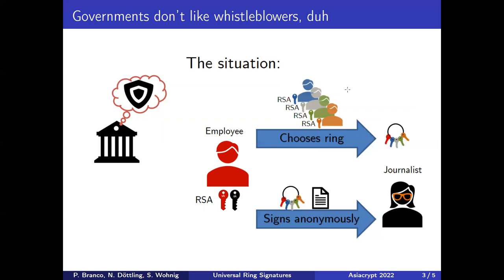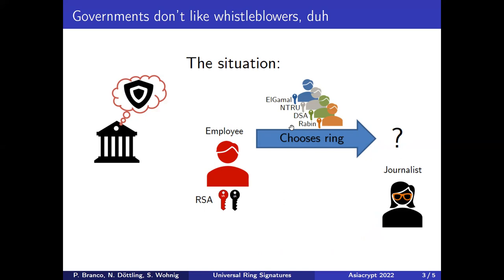The journalist then knows that this is trustworthy data and the anonymity is protected. However, things are a bit complicated today because there's not just one signing scheme, and it's not quite clear if there are ring signatures for every scheme — especially if you add multiple different schemes at the same time into a ring, and how this would work.